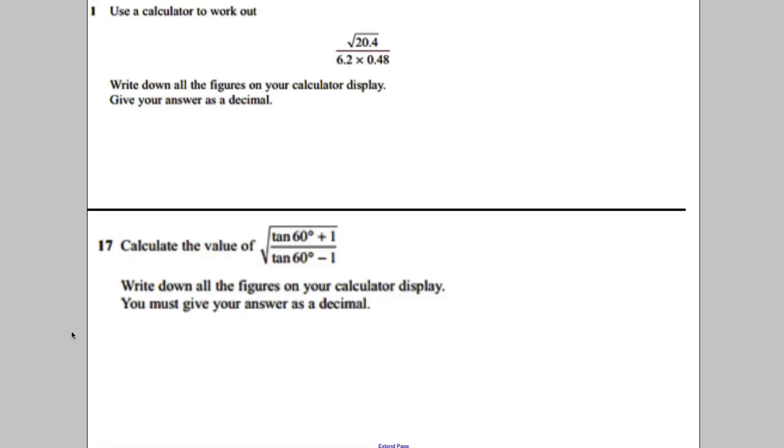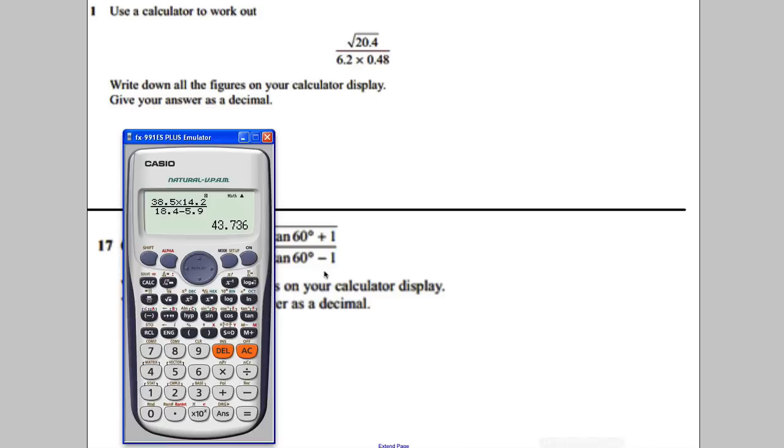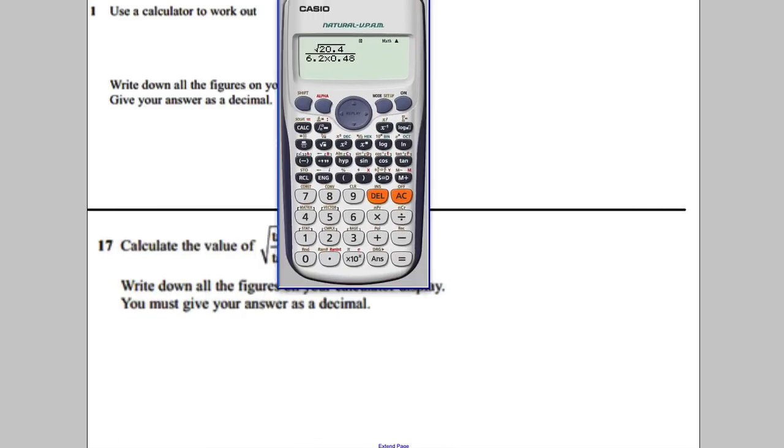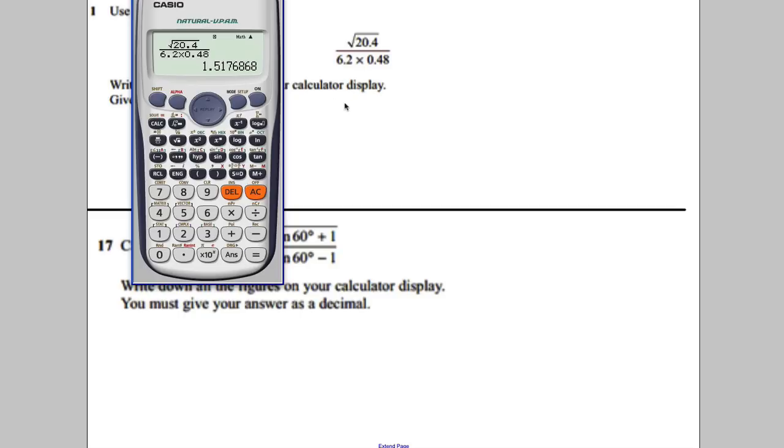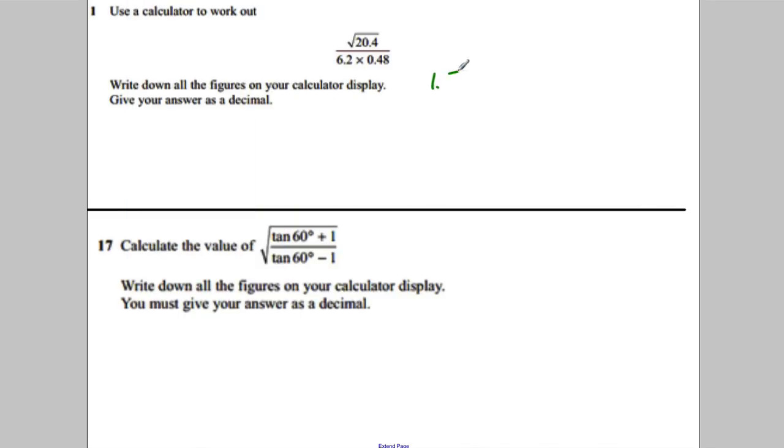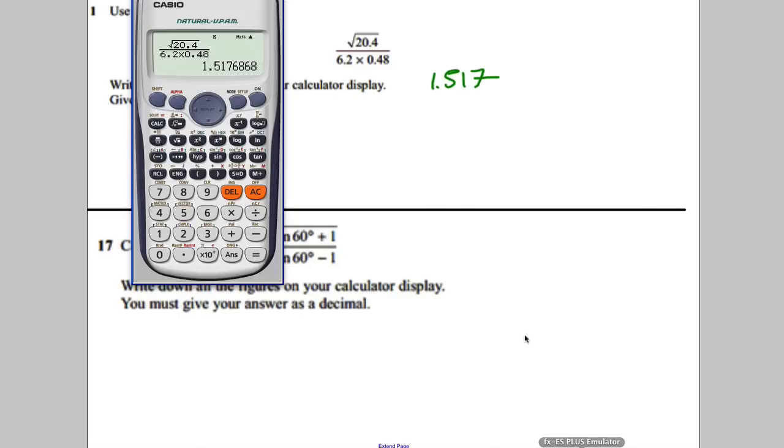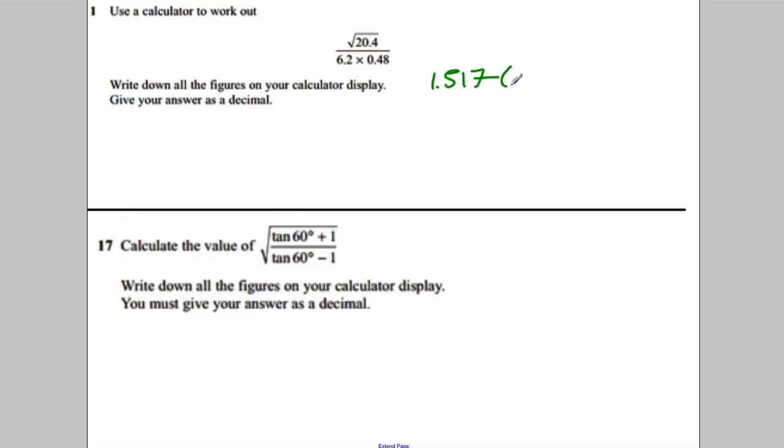Okay, this one here, it says work out this, and it says write all your answers on your calculator as a decimal. So it doesn't ask you to round even. So you do square root 20.4, down, 6.2 multiplied by 0.48. It looks exactly like that in the question. Press equals, and you get 1.51768686.